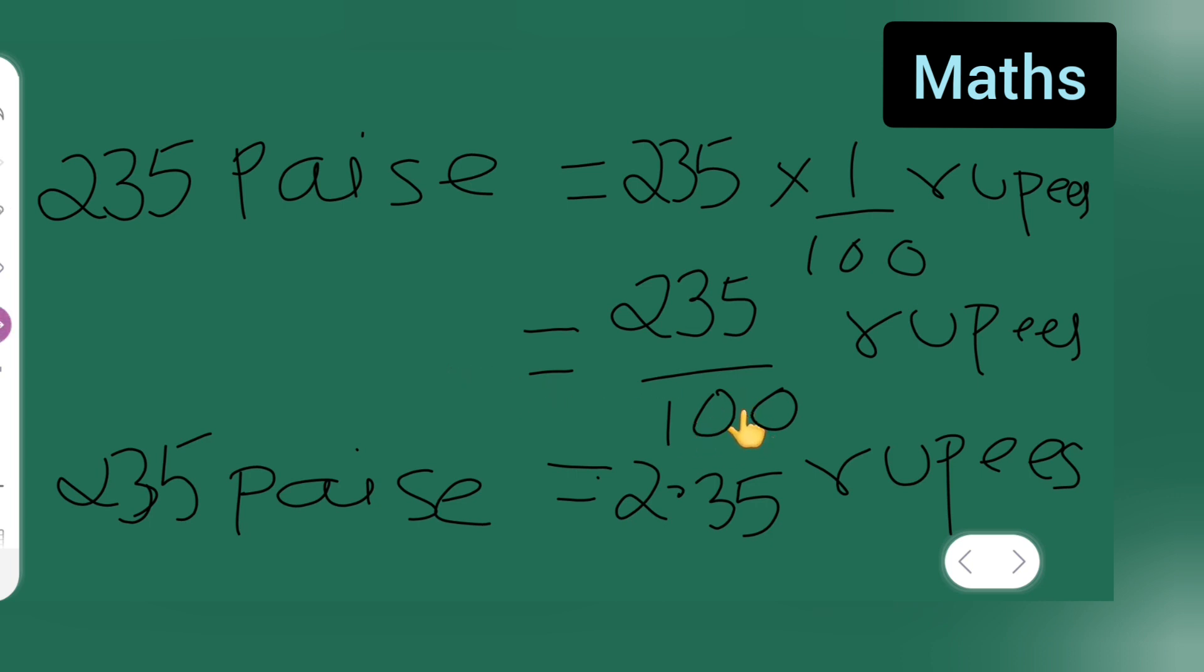So basically there are two zeros, so it will be one, two. So 2.35 rupees. So 235 paise is equal to 2.35 rupees. So I hope you all have understood how to convert paise into rupees. And thanks for watching.